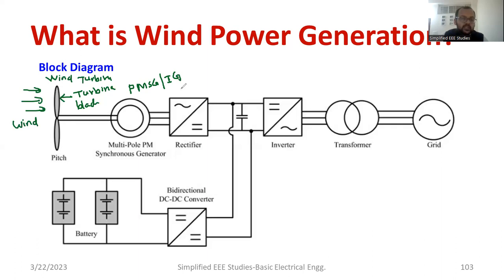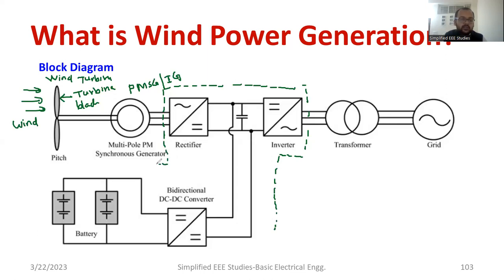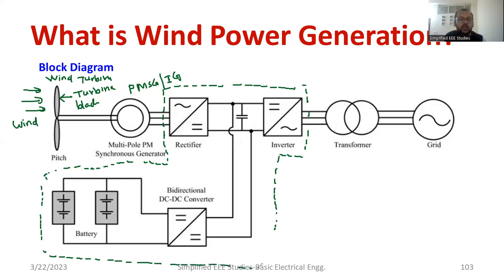The output of the PMSG is connected to the power electronic interface — I am marking it with a dotted line. Observe very carefully: without the power electronic interface, you will not get a regulated power supply. The output of the wind turbine generator will have a lot of irregularity, so the unregulated power will be converted into regulated power by using the power electronic interface.